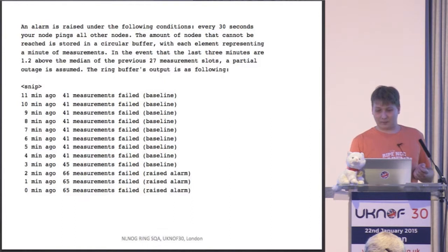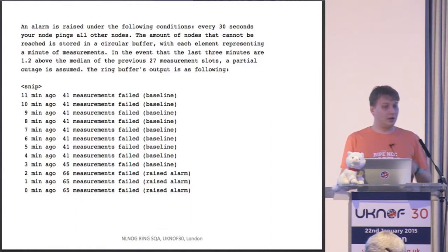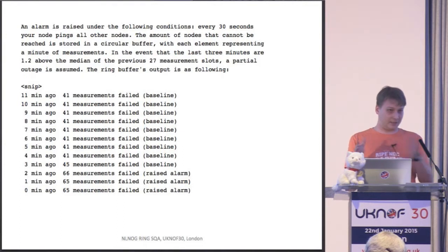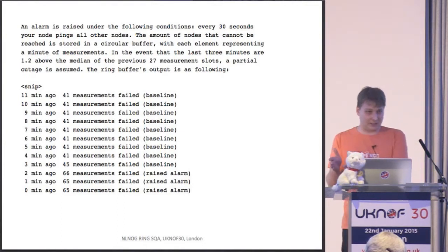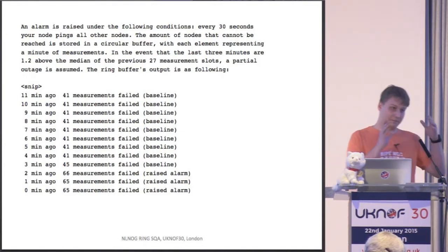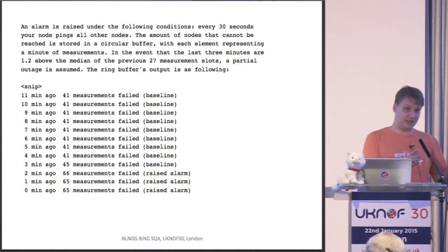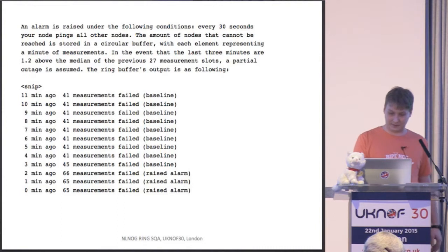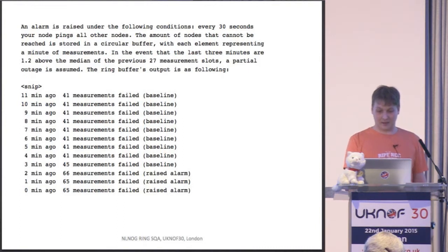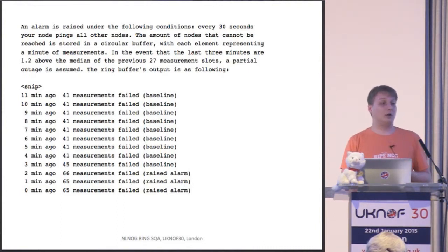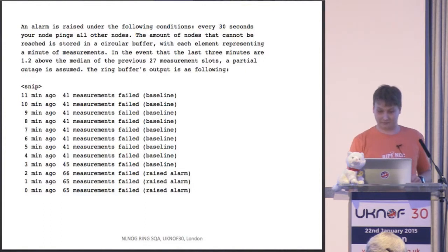This is a part of the ring buffer I mentioned earlier. It maintains state for the last 30 minutes — it compares the last three minutes with the 27 minutes before that, and then you can see how high the deviation is from the baseline.